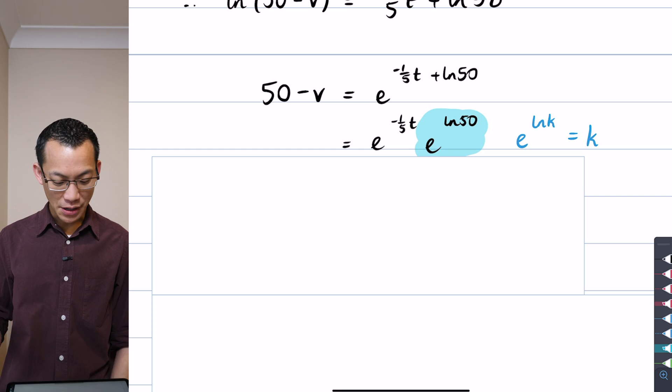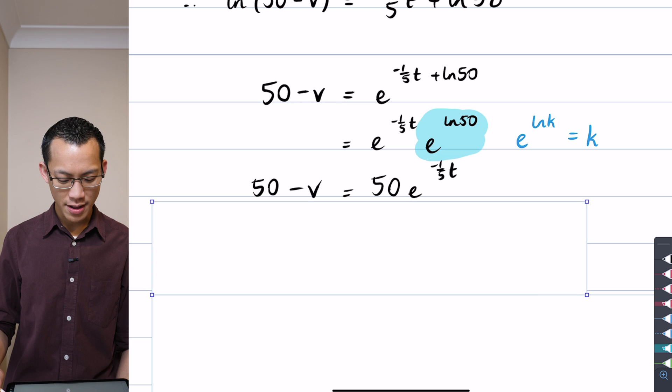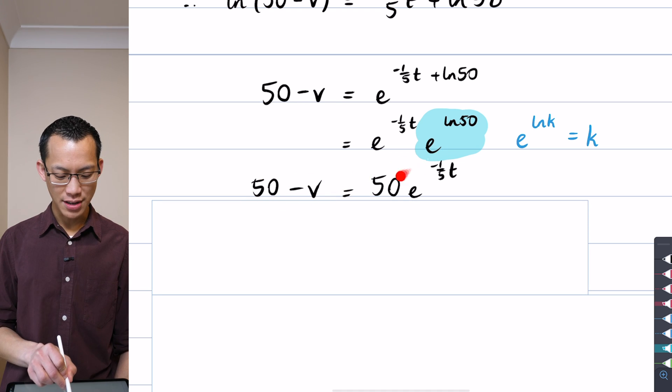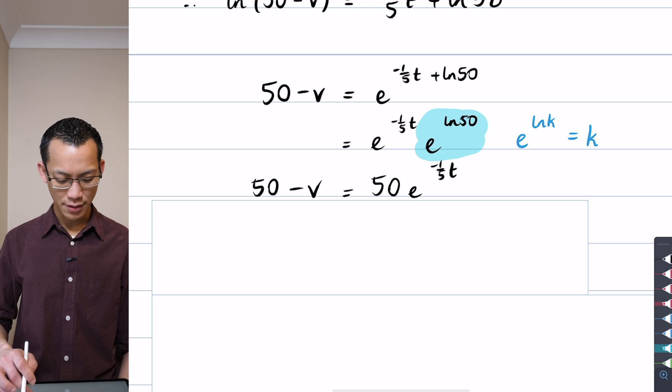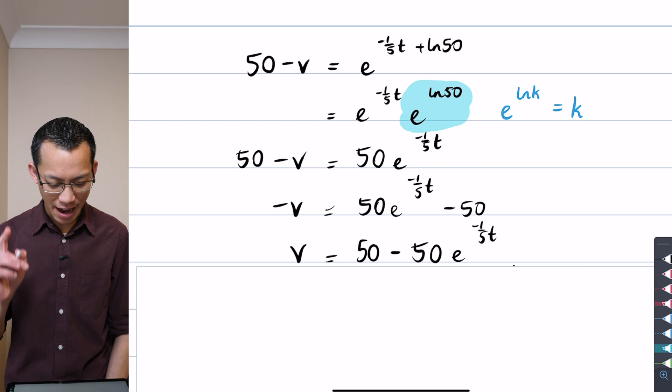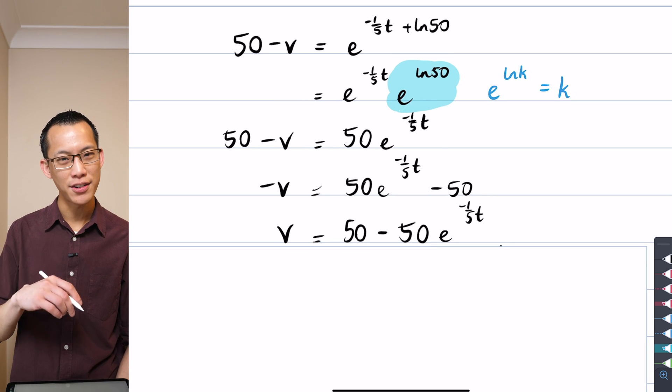So once you've got that, because e to the log 50 is 50, you can see I'm going to end up with this 50 minus v, hasn't changed on the left-hand side, but this turns into that coefficient of 50 at the front there, and so where do we land? I've now got v, sort of, I'm tidying it up, I'm trying to get it as a function of time.